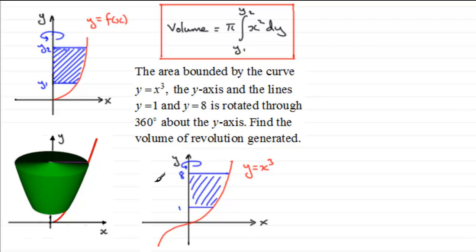Now to find the volume we've got to use this formula here but we need x squared in terms of y first of all. So we know that y equals x cubed and if we take the cube root of y then x would equal y to the power one-third. Now we want x squared so it follows from this that x squared must be equal to y to the power one-third all squared which is y to the power two-thirds.